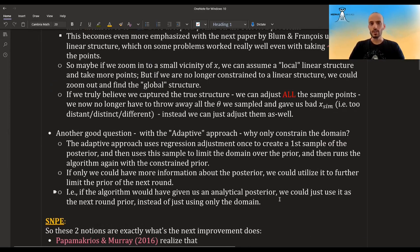And another good question to ask: in the previous video, I mentioned that the second paper used an adaptive approach. So they took the first round, they did the first round of rejection ABC with regression adjustment, and then they used it as a prior, not exactly as a prior, they just limited the domain of the prior. And now they sampled from the prior in the next round. And if the sample point was outside of this domain, they just threw it and didn't do anything with this. And this improved the accuracy.